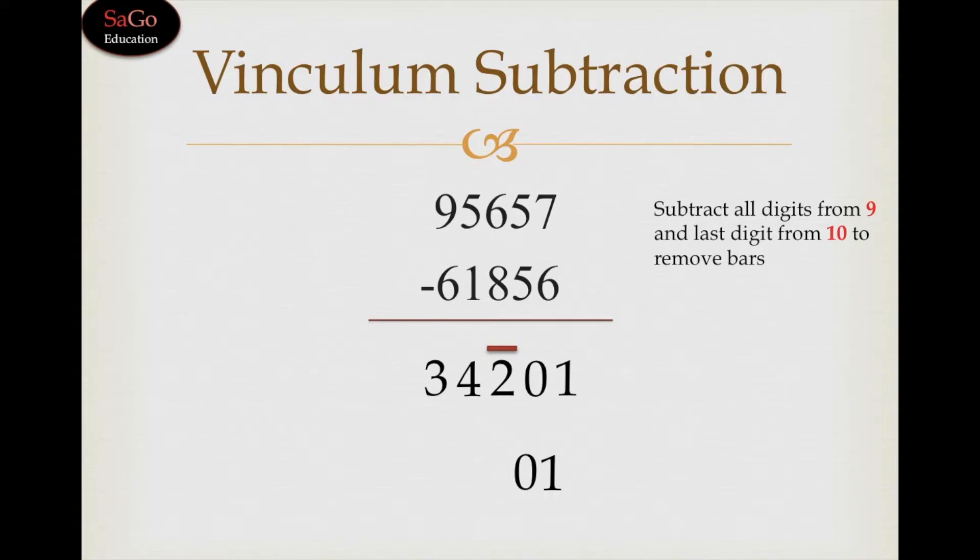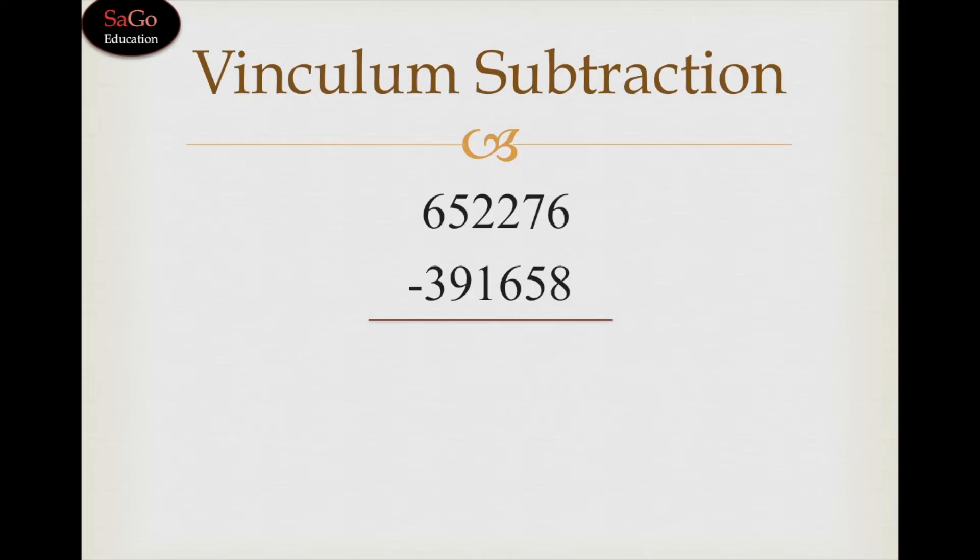Because bar is being started from 2, so 10 minus 2 is 8, write 8. And there's no other digit which carries bar above it, so we'll consider 34 as the whole digit and we would take the predecessor of 34. Here because there's no bar after 2, so the predecessor of 34 is 33, write down 33. Our answer is 33801.